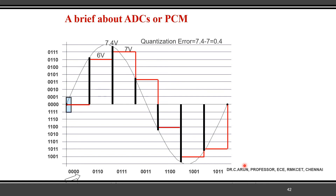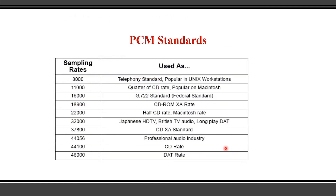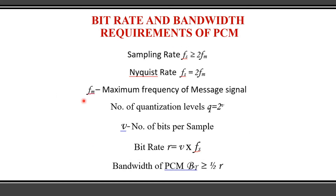In PCM, different sampling rates are available. If you need higher quality audio you must increase the sampling rate. The minimum sampling rate discussed so far is 8000 samples per second; the telephone standard uses 8000 samples per second; CD quality requires higher rates. Continuously increasing the sampling rate definitely increases the audio quality. Next, what is the bit rate and bandwidth requirement to transmit a PCM signal?